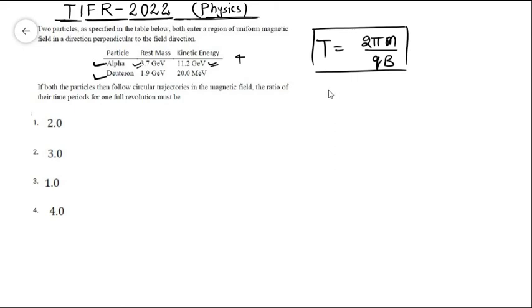If we take the relativistic effect into account for the alpha particle, we will get T_alpha, the time period for the alpha particle, equal to 2πM₀ (the rest mass of the alpha particle) times gamma divided by qB. So what is the value of gamma?